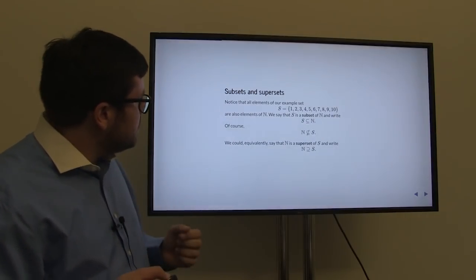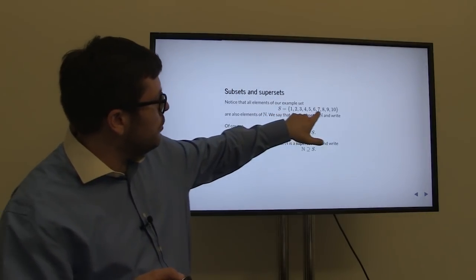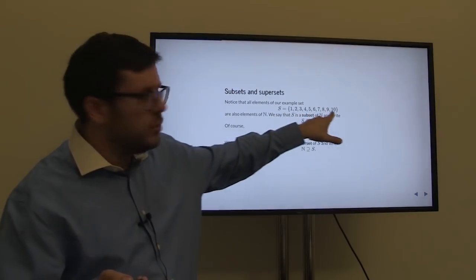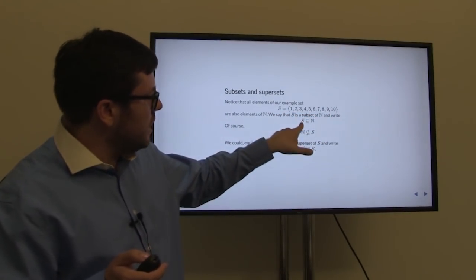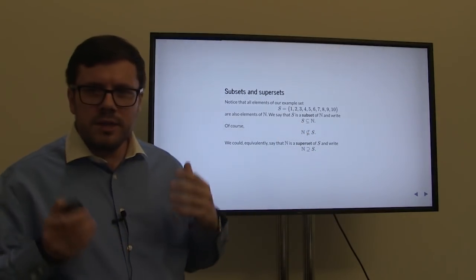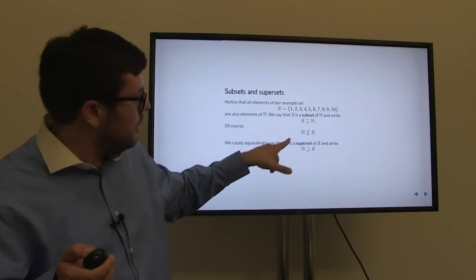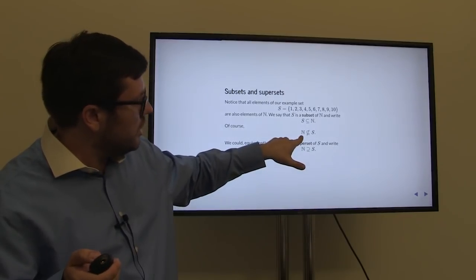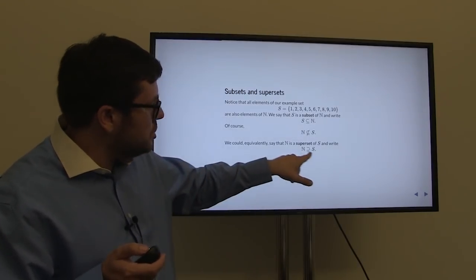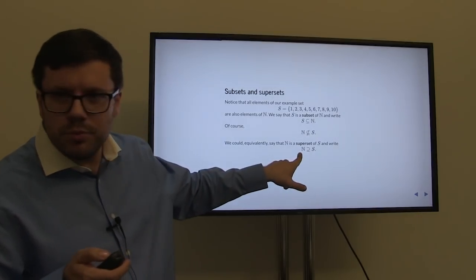Subsets and supersets. Notice that all elements of our example set S — 1, 2, 3, 4, 5, 6, 7, 8, 9, 10 — are also elements of natural numbers. They all happen to be natural numbers. Therefore, we can say that S is a subset of natural numbers. It's not true, though, that every natural number is in S — 11, for example, is not in S. Therefore N is not a subset of S. We could equivalently say that N is a superset of S, and S is not a superset of N.